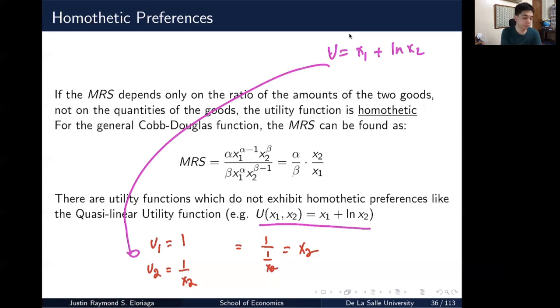If you take the derivative of that with respect to good one, that's just one because this one becomes zero. Then if you do that for u2, derivative of ln x2 is just 1 over x2. So you get an MRS equal to x2, which is a sheer quantity. So it's not a ratio. So this particular quasi-linear utility function is not or does not exhibit homothetic preferences.